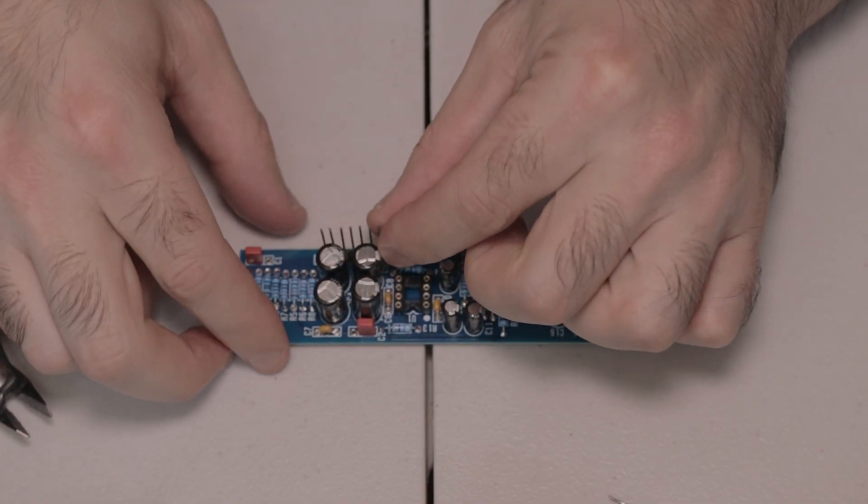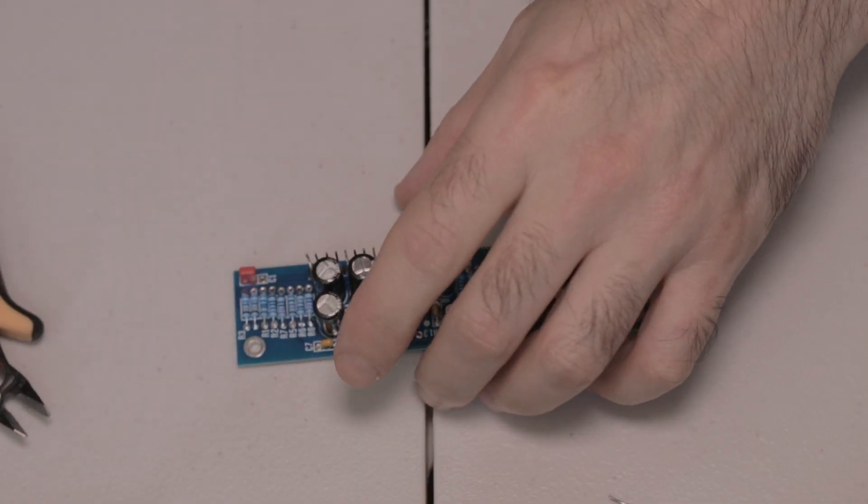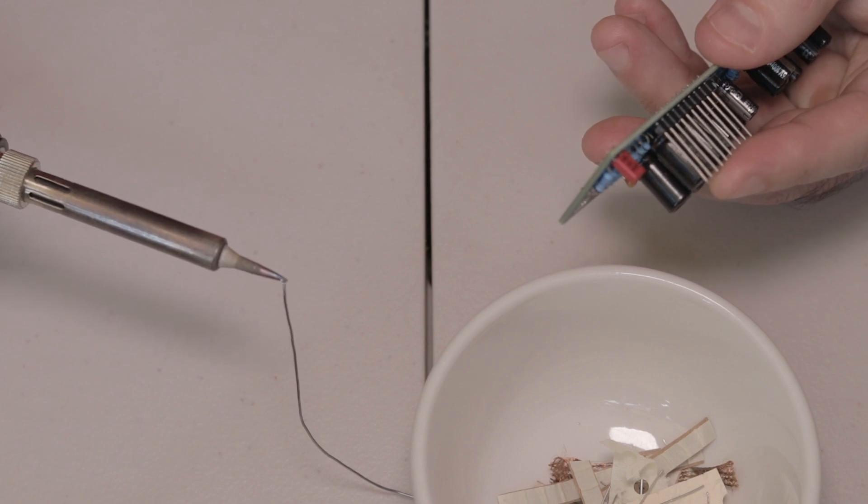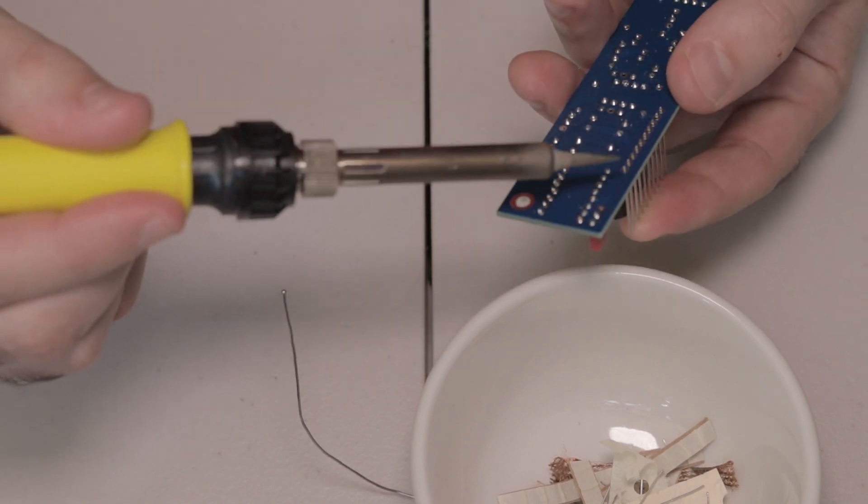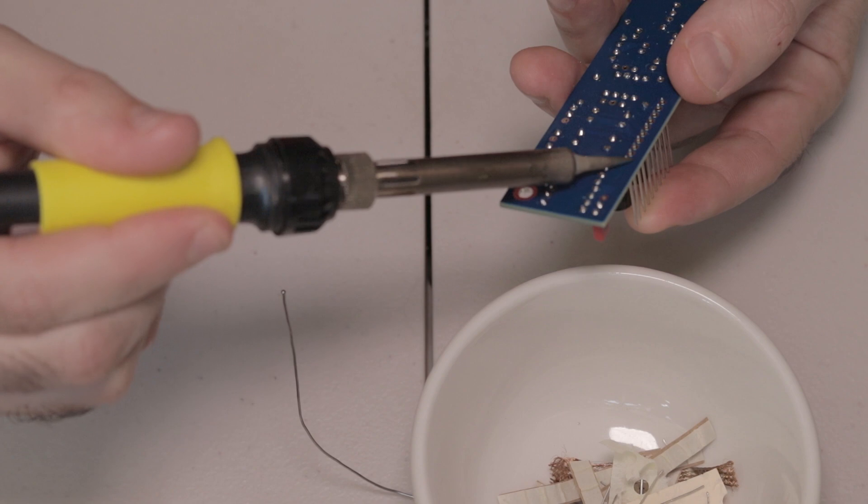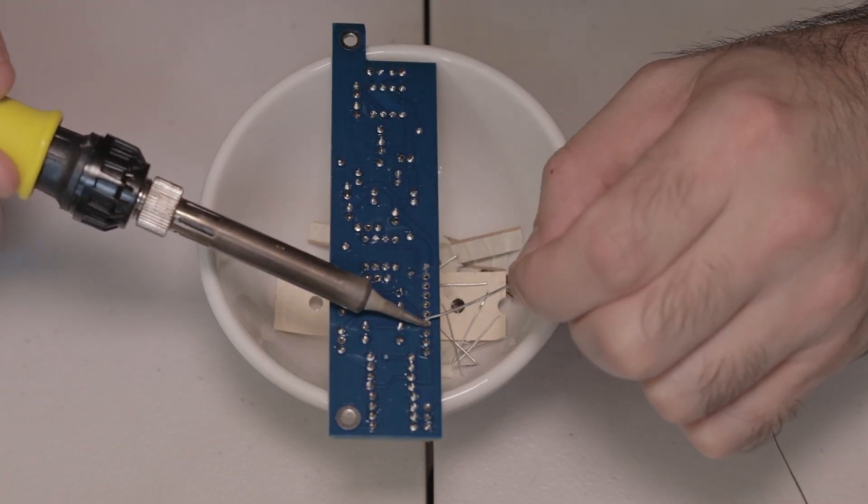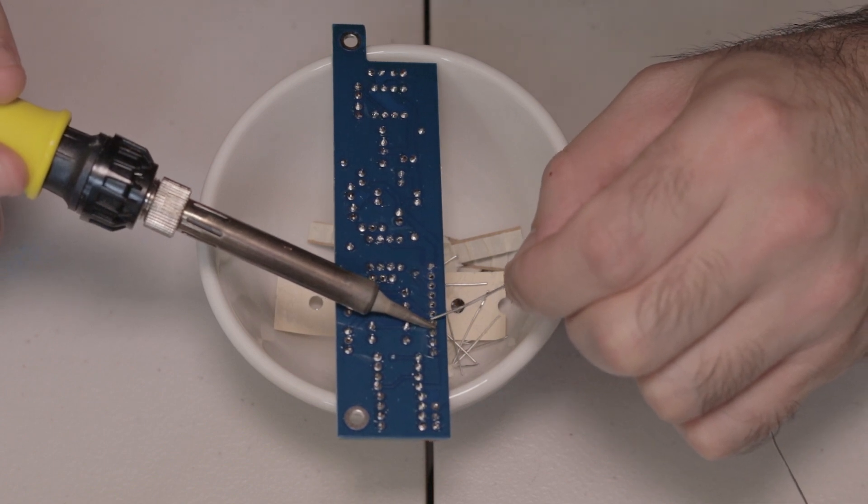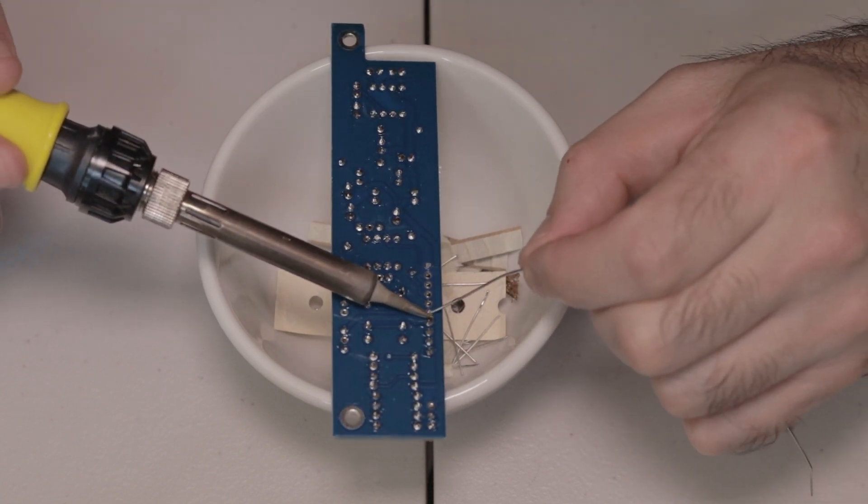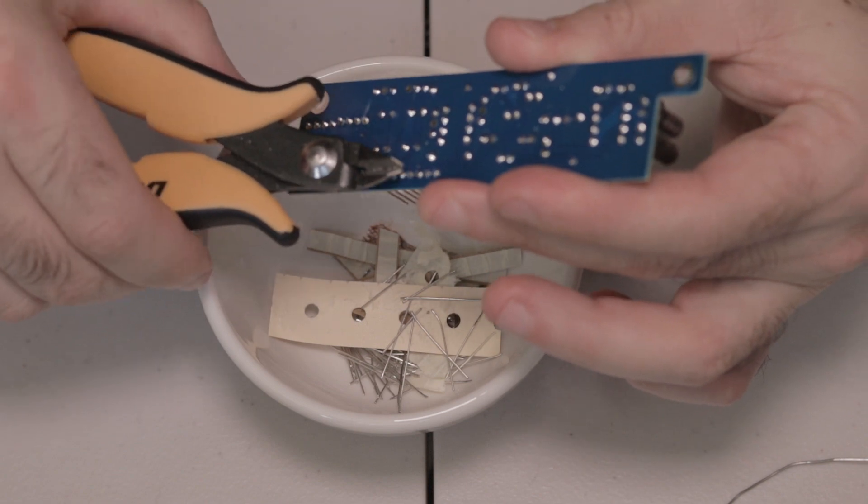And then lastly, there is this 10 pin connector that we need to solder to CN4B. Same again, just solder one leg first, make sure that it's straight and flat on the board, then solder the other pins and just make sure that you don't overheat these pins because it can melt the plastic and then they won't be straight.